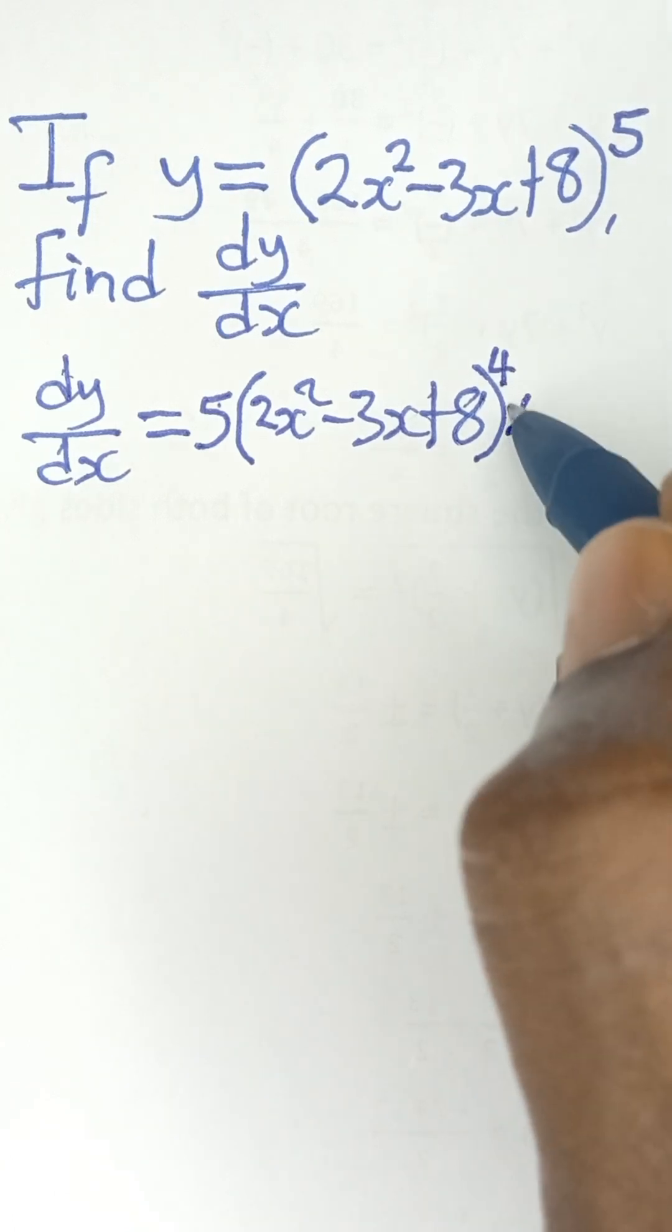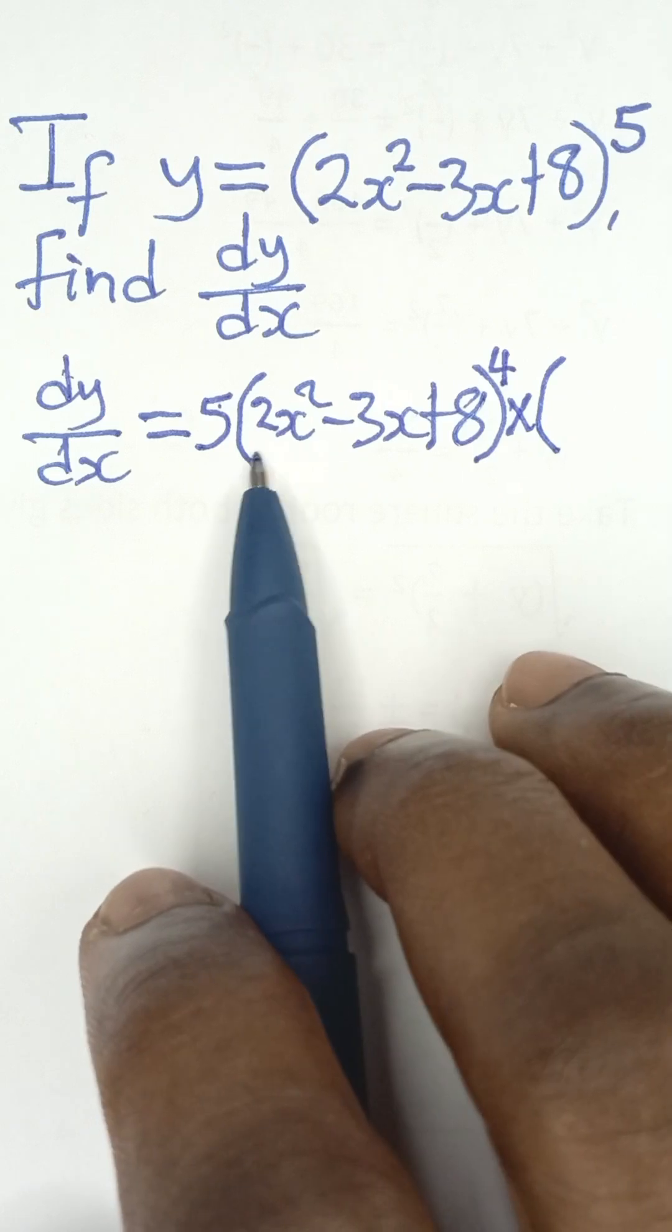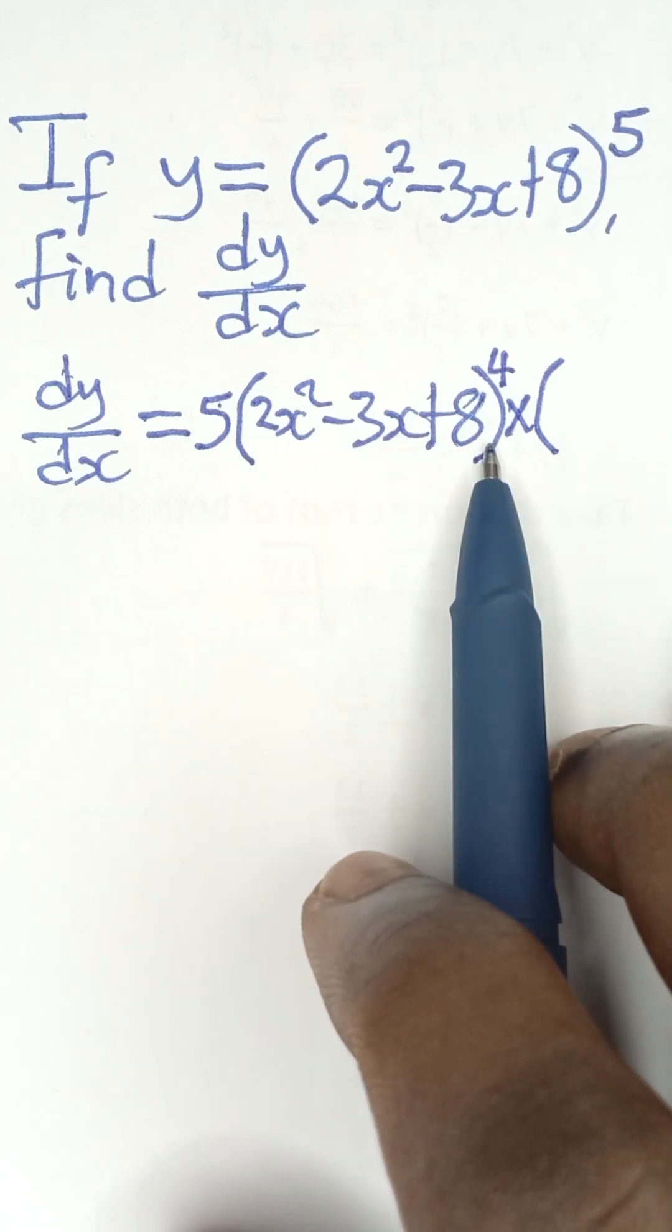And then you also multiply by the derivative of whatever is inside this bracket.